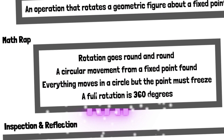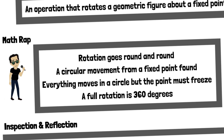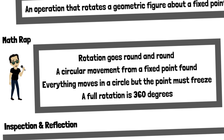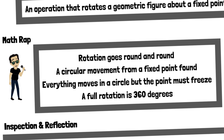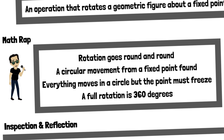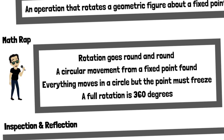Math Wrap. Rotation goes round and round. A circular movement from a fixed point found. Everything moves in a circle, but the point must freeze. A full rotation is 360 degrees.